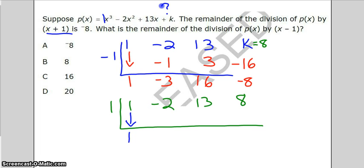So, we have a 1. We multiply the 1 times the 1 to get 1. Negative 2 plus 1 is negative 1. 1 times negative 1 is negative 1. 13 minus 1 is 12. 1 times 12 is 12. And 8 plus 12 is 20. So, the remainder is 20.